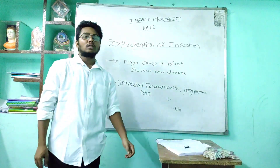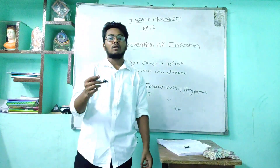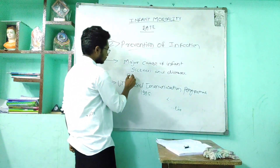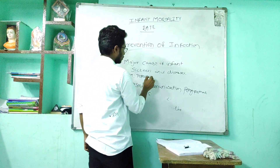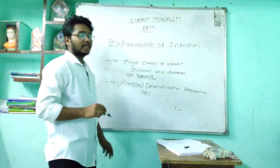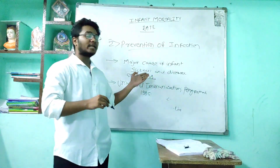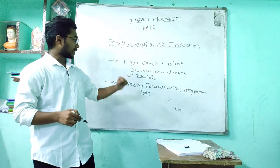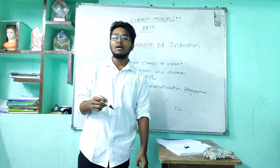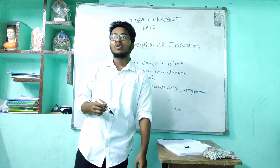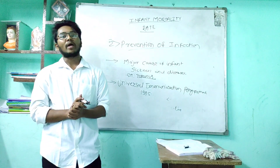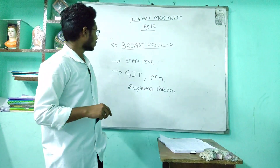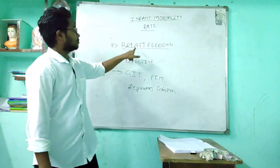Another preventive measure is prevention of infection. Major causes of child sickness and disease are preventable through vaccination. Tetanus is one neonatal mortality cause that can be easily prevented by vaccine. The Universal Immunization Program was launched in 1985 in India for prevention of vaccine-preventable diseases for all expectant mothers and children.